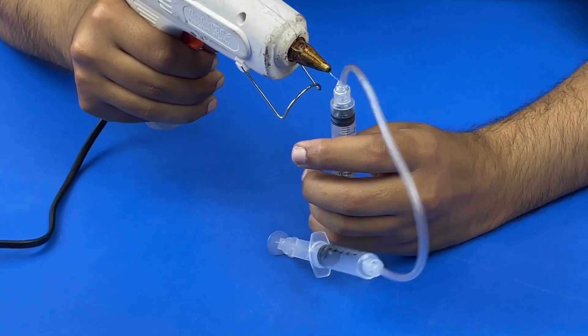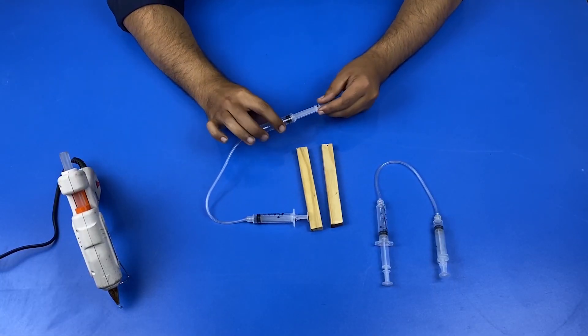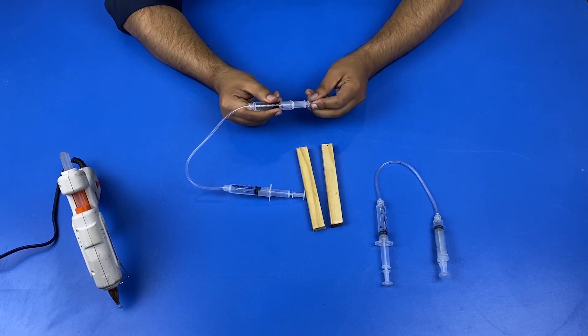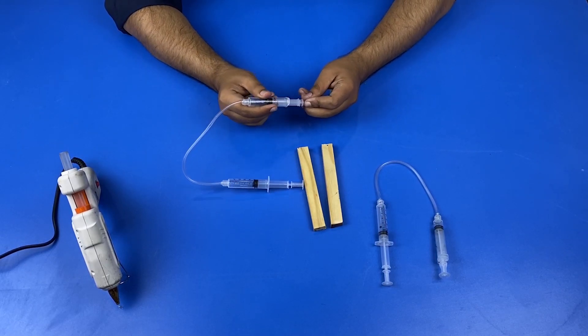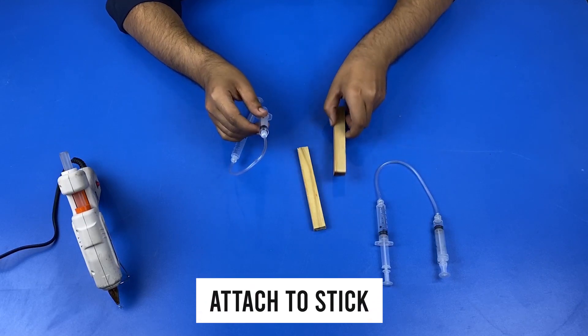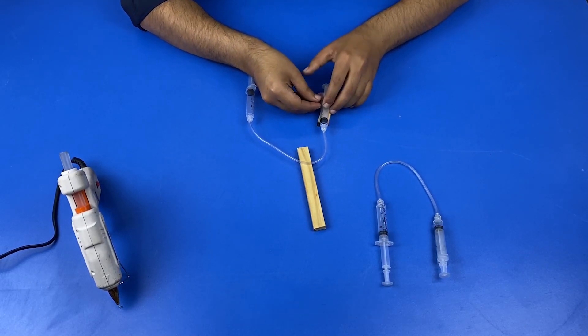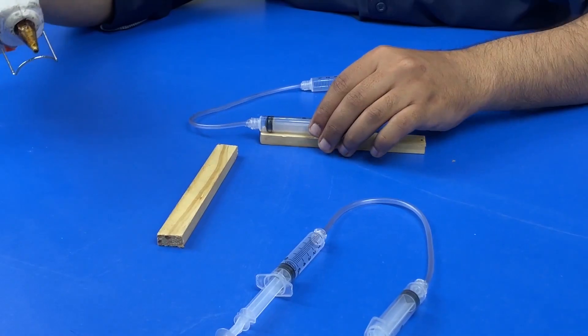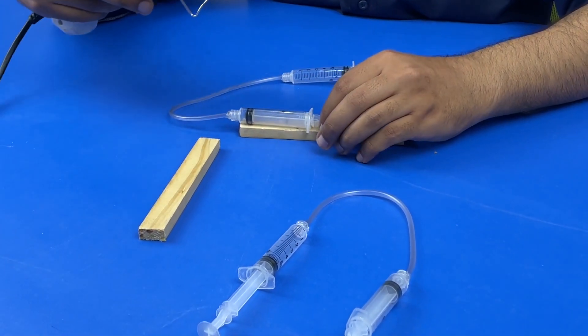After gluing all the syringes, take two sticks and attach one syringe with each stick with the help of super glue. Apply super glue to both the sticks and attach both the syringes one by one.